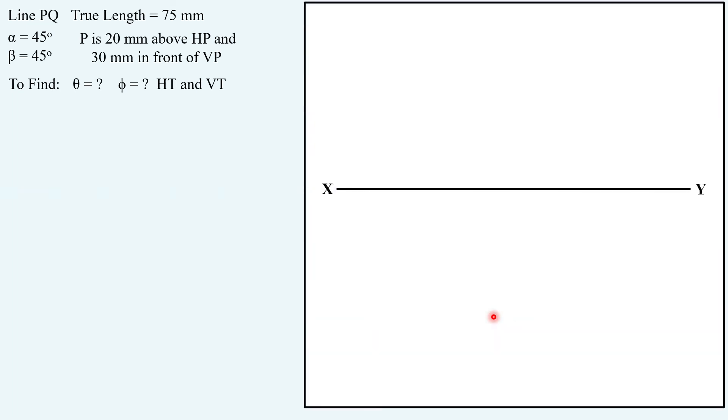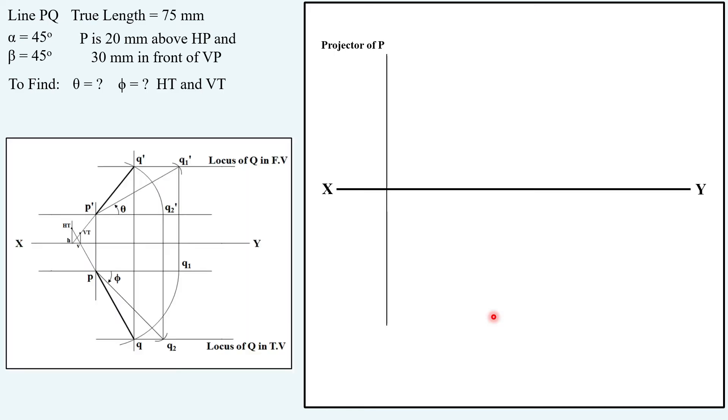Taking an XY line, vertical projector of end point P. Now taking the distance 20 mm above HP as mentioned in the question, locating P'. 30 mm below, that is in front of VP, locating end point P, that is the top view of point P.